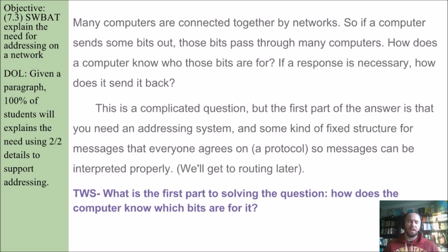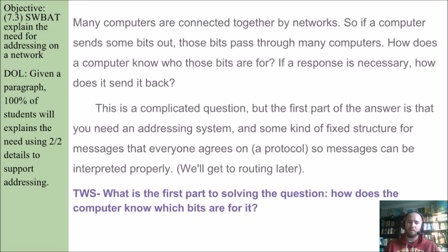Many computers are connected together by networks, so if a computer sends some bits out, those bits pass through many computers. How does a computer know who those bits are for? If a response is necessary, how does it send it back? The first part of the answer is that you need an addressing system and some kind of fixed structure for messages that everyone agrees on — a protocol — so messages can be interpreted properly. We'll get to routing later.